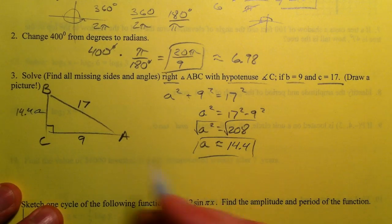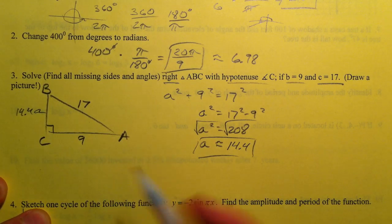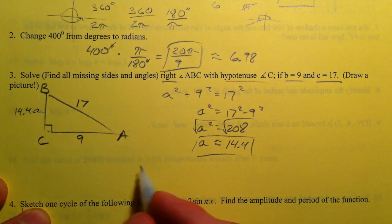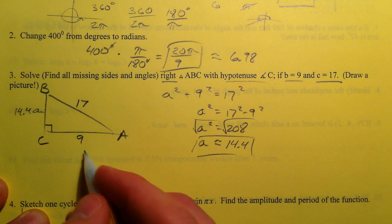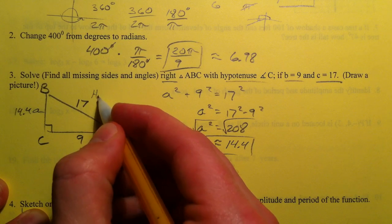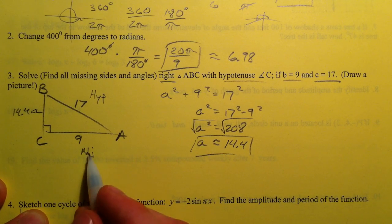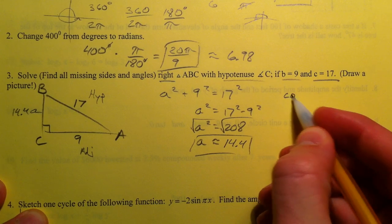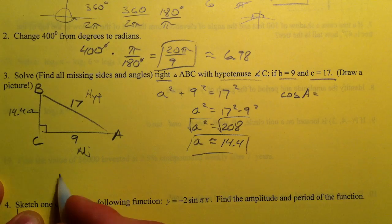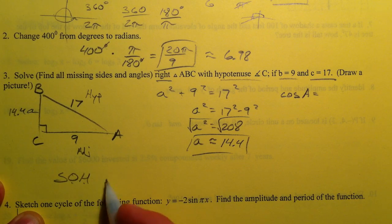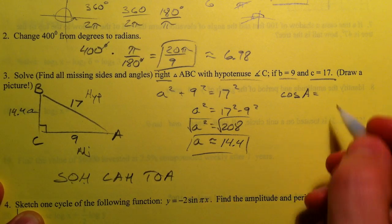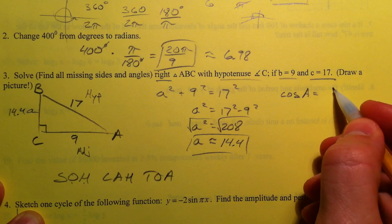So this is 14.4 now. We've got part of it. Now we need to find angle A or B. It doesn't matter which one you find. Let's find angle A. And so according to angle A, this is our adjacent side. And this is our hypotenuse. And so I'm going to use cosine to solve for angle A. So the cosine of whatever angle A is, is the adjacent over hypotenuse. Remember that sine is opposite over hypotenuse. Cosine is adjacent over hypotenuse. Tangent is opposite over adjacent. So the cosine is 9 over 17.